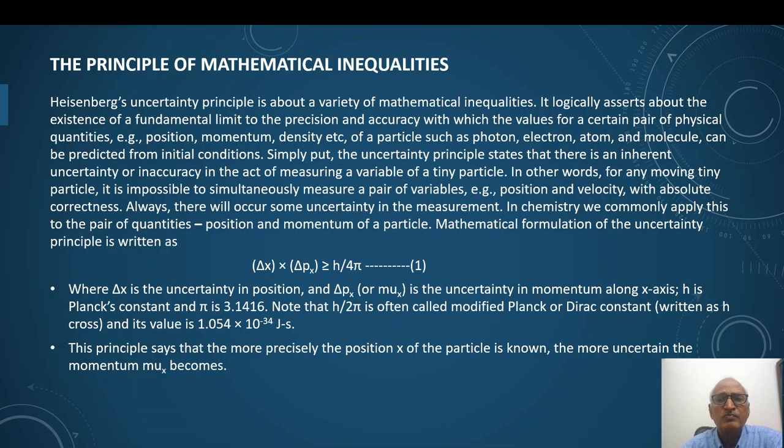Next we talk of the mathematical formulation of the uncertainty principle. It is most commonly written as Δx multiplied by Δpx equal to or greater than h upon 4π. In this expression, Δx refers to uncertainty in position x. Δpx refers to uncertainty in momentum v along x direction. We can say it refers to uncertainty in velocity ux along x direction. h is the well-known constant, Planck constant. π is another constant.